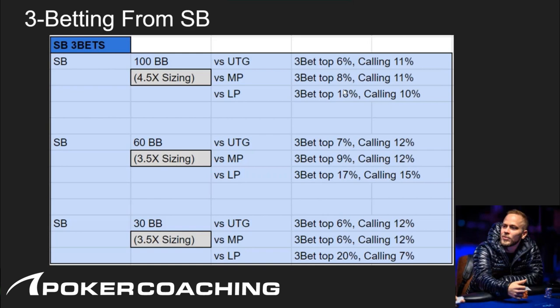Notice how much the three-bet jumps from 6% to 18% based on position. I would say the pool is under-three-betting overall, but especially in late position — I don't think anyone at the mid-stakes or low-stakes level is hitting that 18% three-bet. It's a 10% VPIP so the small blind is supposed to be VPIPing 28% versus an LP open — you just never see that happening. This is a huge difference, and if the pool has trouble calling three-bets, that 18% can be pushed up even further.